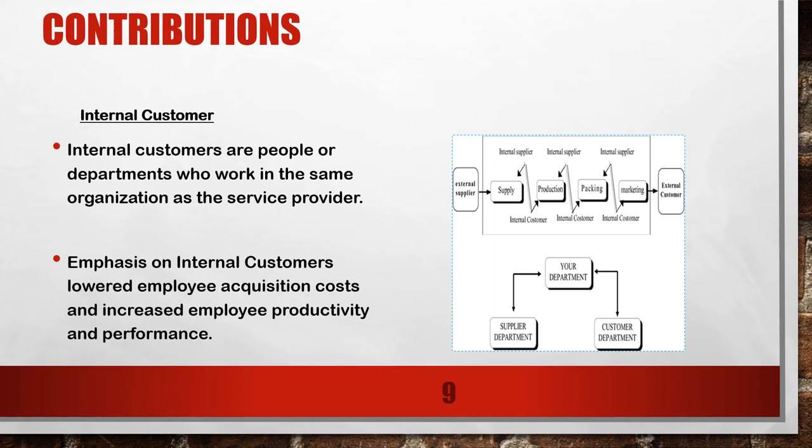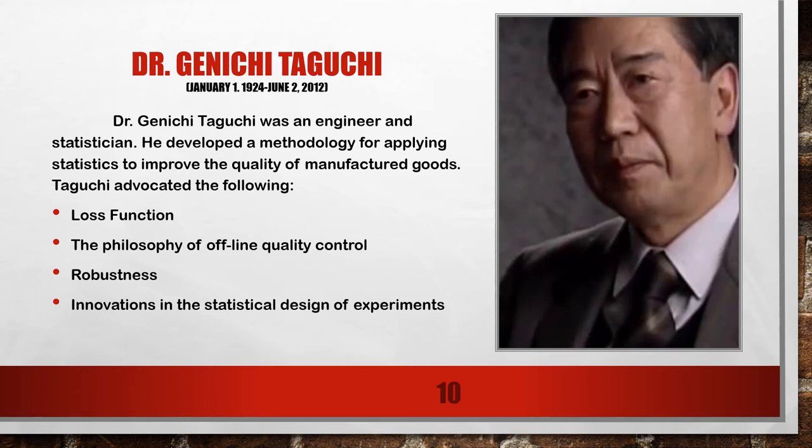Looking at the diagram, we're seeing where it goes from the external supplier to the external customer. In the middle, we're seeing the internal customer and the internal supplier. It goes from external supplier, supply, production, packing, marketing, and external customer.